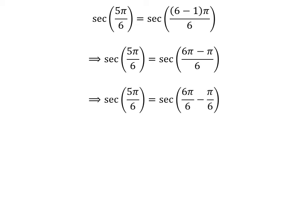The fraction 5 times pi upon 6 can be expressed as the difference of two fractions: 6 times pi upon 6 and pi upon 6. Cancelling out the common factor in the numerator and the denominator gives us secant of 5 times pi upon 6 is equal to secant of pi minus pi upon 6.